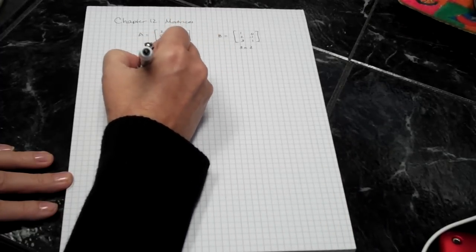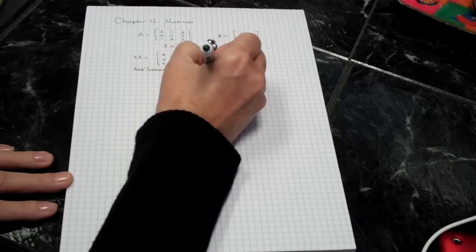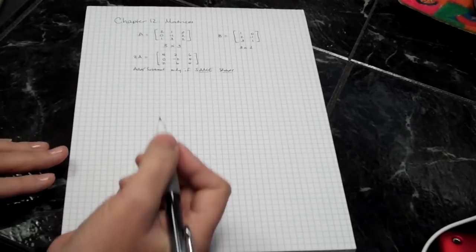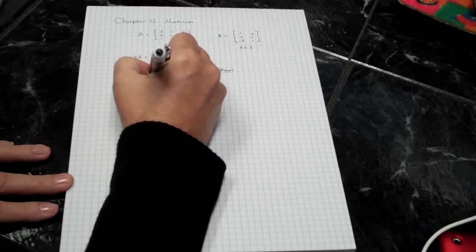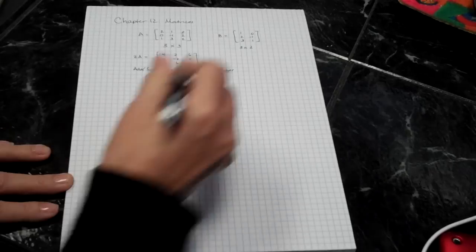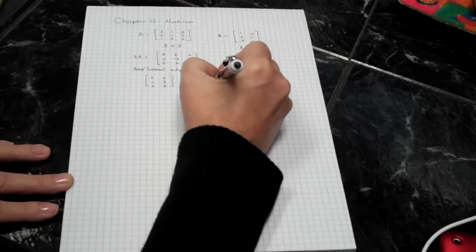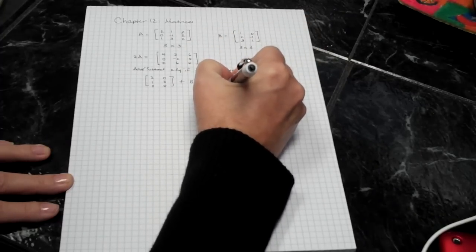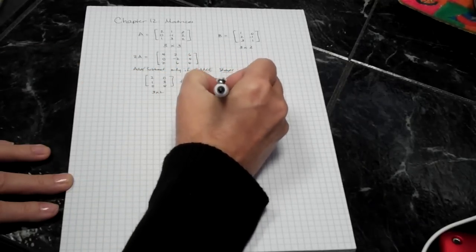I can also add two matrices, but to add or subtract, I have to have exactly the same shape. So A and B cannot be added to each other, but I could add 2, 1, 0, 0, 3, 4 to B as defined up here. And I get 2 plus 1 is 3, 3, 3, 0, 2, 5.